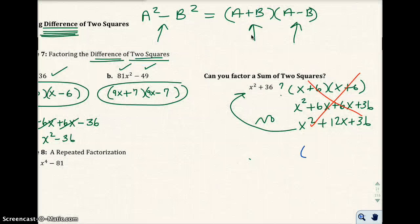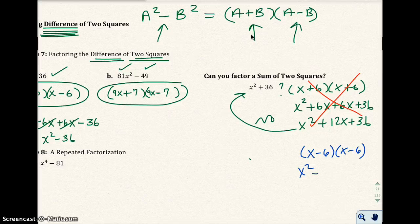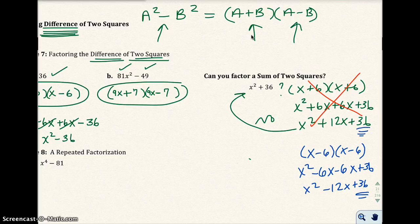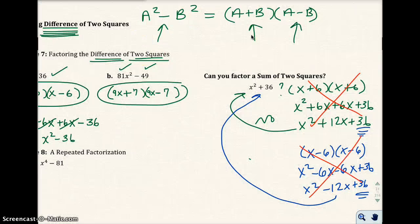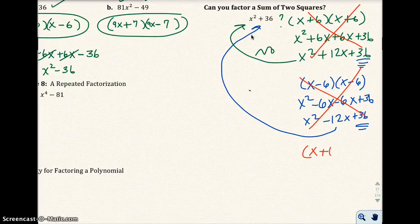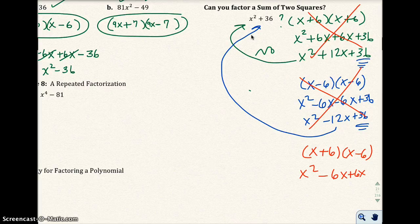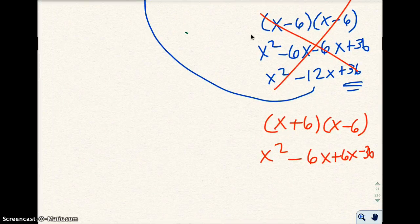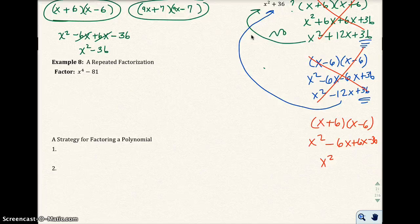Some people try x minus 6 times x minus 6, which gives x squared minus 12x plus 36 — that's not the same. And x plus 6 times x minus 6 gives x squared minus 36, which is also not the same. So no, you cannot factor the sum of two squares. If you see the sum of two squares, you cannot factor it.